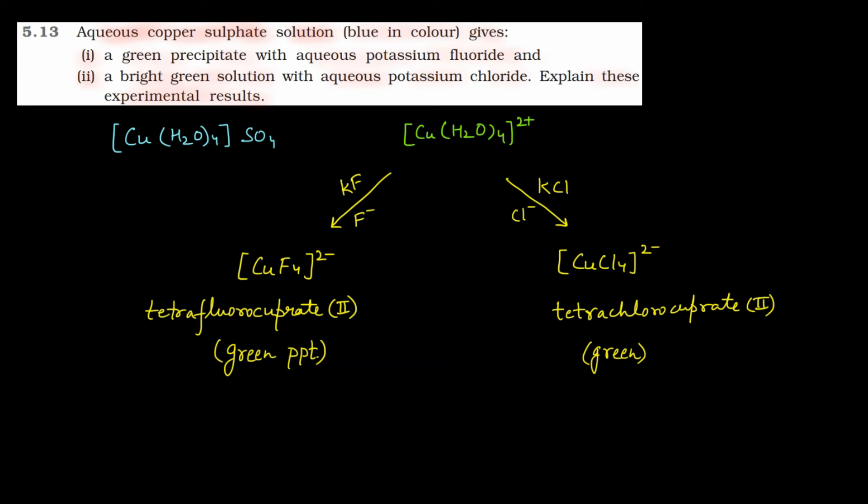If you have asked this experimental result, we have done that. When you have aqueous copper sulfate solution, you will get tetrafluorocuprate. This means F- has replaced water ligands, so you will get a green color precipitate. And if you add aqueous potassium chloride, they will replace water. Chloride ions will replace water. So you will get [CuCl4]^2- and you will get a green color solution.